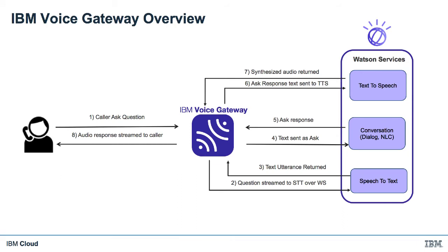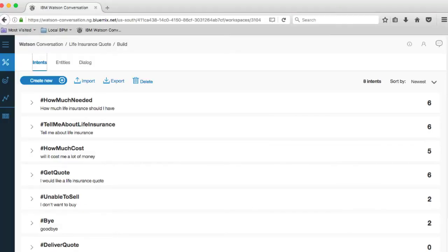This diagram shows the interaction between the caller, Voice Gateway, and the various Watson services in more detail. At step one, the caller is asking a question, speaking into their phone. Voice Gateway then uses a Watson speech-to-text service in steps two and three to have that speech converted into text. At step four, the text is sent into Watson conversation to understand what the user is asking for, and then we get the response. Before we can send that response back, we have to have that text converted back into speech using the text-to-speech service. We get the synthesized speech back, and then we send that back down the phone line. Voice Gateway depends on three Watson services: speech-to-text, text-to-speech, and conversation.